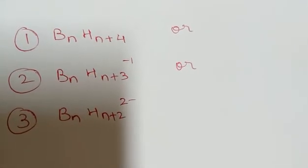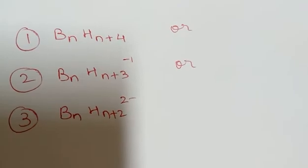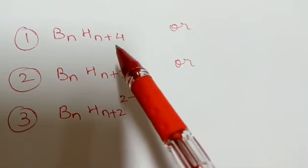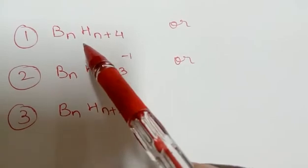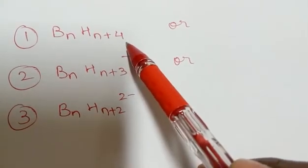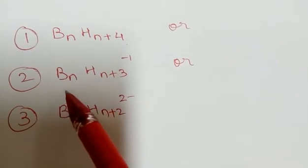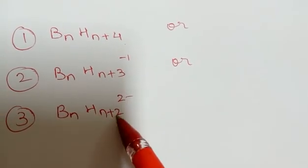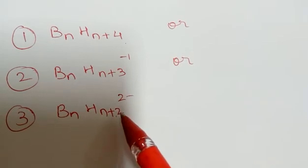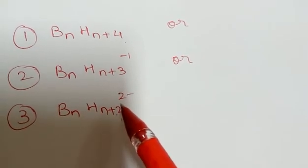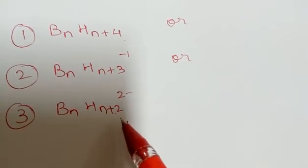In order to check whether the given cluster geometry is Nido, you have to consider these three formulas. BnHn+4, this will be considered a case of Nido. Similarly, these formulas, you make a note of it, and this will tell you that the given geometry is Nido.